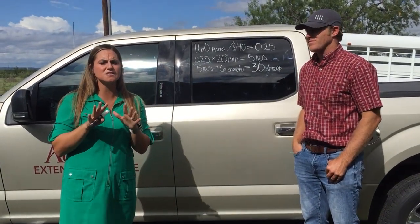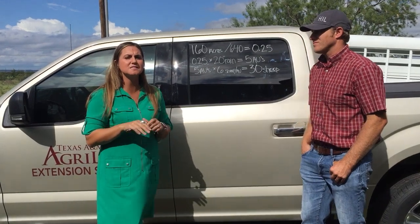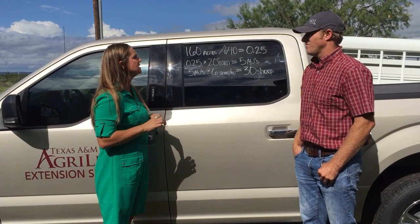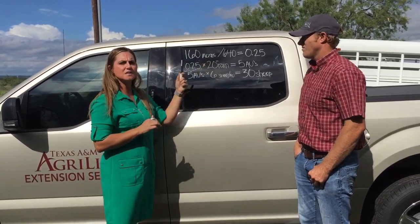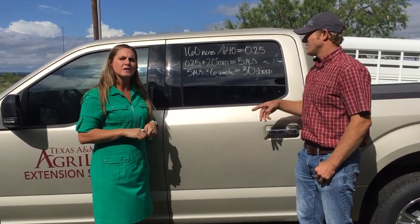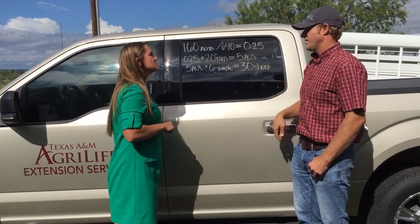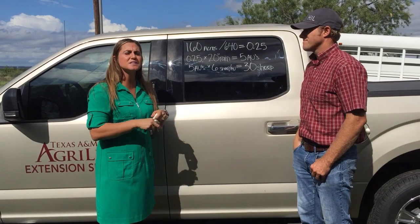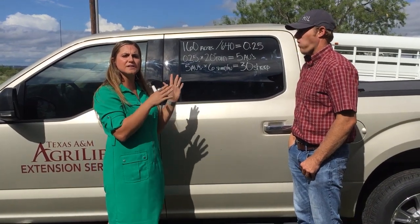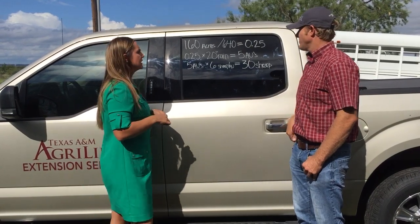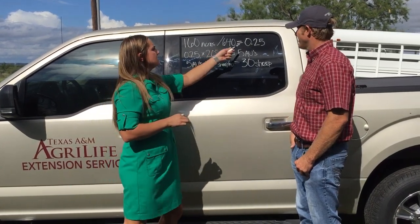Stocking rate calculations can be really complicated, but it's only as complicated as you make it. For this example, we're going to use a quarter section of land, which is 160 acres. We're going to divide it by 640 — that'll give us 0.25. There are 640 acres in a section, so this example only works if you work it into sections. That's why we have that conversion factor, and so we'll get 0.25.